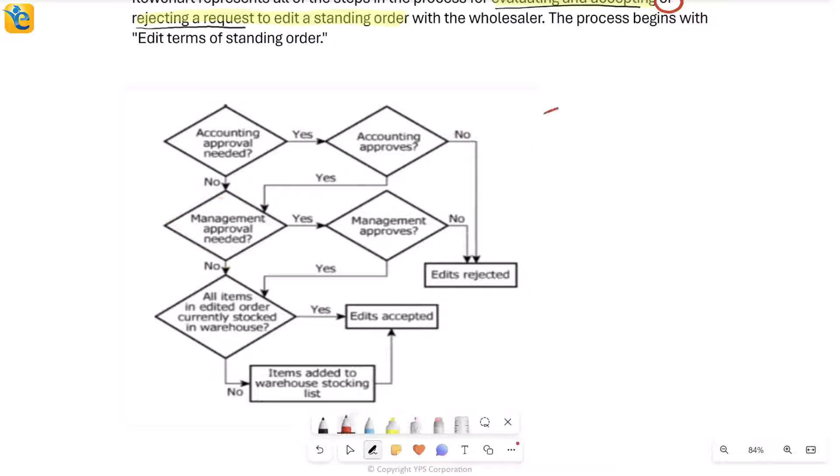You can think about this as stages where first you are thinking about accounting approval—needed or not needed. If it is needed, do you get it or don't get it? Then you come to the second stage, which is about management approval. Again, do you need it or don't you? If you don't need it, simply move on. But if it is needed, then is it approved or is it not approved?